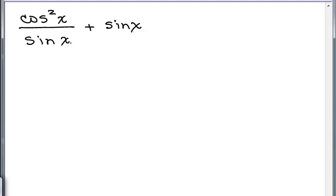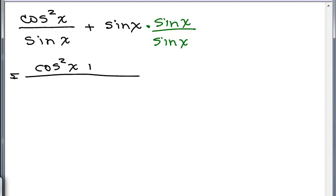So I have a sine x over here, so I'm going to multiply this second term by sine x over sine x. And that will give me in the new numerator, cosine squared x plus sine squared x. That should look very familiar to you.